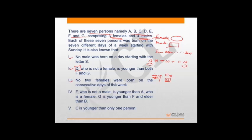No two females are born on consecutive days of the week. That means Monday must be a male person and Friday must also be a male person. Tuesday, Wednesday, and Thursday can accommodate one female and two males from the remaining three females and four males.